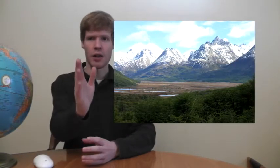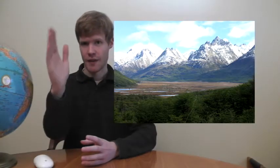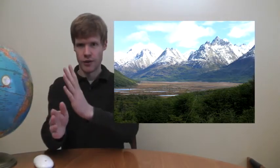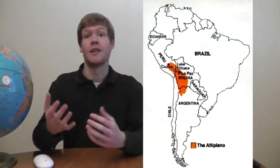It is made up of cordilleras, which are parallel mountain ranges that go one after another after another. In Peru and Bolivia, the cordilleras kind of split apart and they encircle an area known as the Altiplano, which means the High Plain.